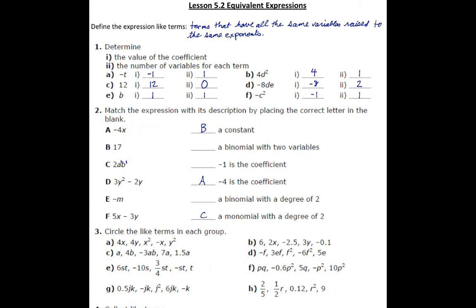Next, we've got 3Y squared minus 2Y. This is a binomial, and it also has degree 2 because the first term has degree 2 and the second term has degree 1 — we take the bigger number, so degree 2. It is a binomial because it has two terms. Next, we've got negative M: negative 1 is the coefficient — the 1 isn't written but is understood to be negative 1. Finally, 5X minus 3Y fits the last description — a binomial with two variables: two terms, and there's an X and a Y.